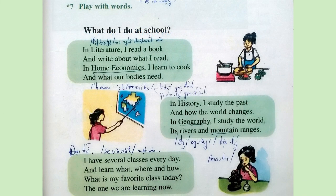Exercise 7: Play with words. Page 47. What do I do at school? In literature, I read a book and write about what I read. In home economics, I learn to cook and what our bodies need. In history, I study the past and how the world changes. In geography, I study the world, its rivers and mountain ranges. I have several classes every day and learn what, where, and how. What is my favorite class today? The one we are learning now.